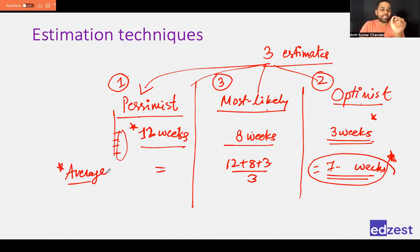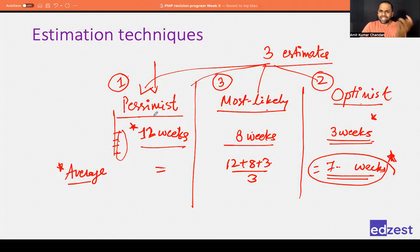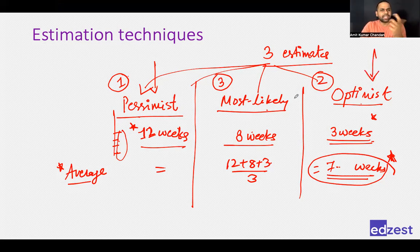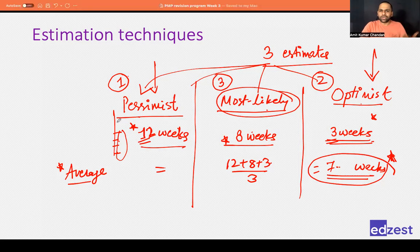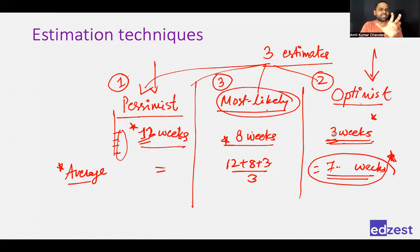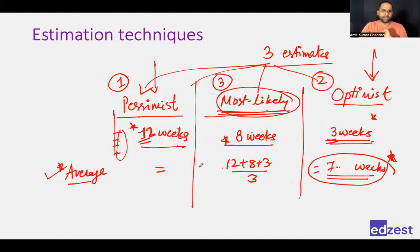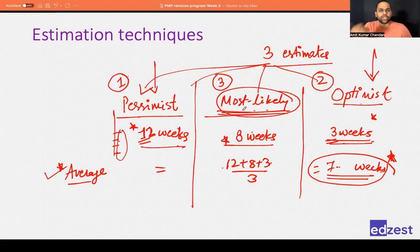However, the probability that everything will go wrong is less, and the probability that everything will go right is also less. The chances of finishing close to 8 weeks is much greater than 12 weeks or 3 weeks, because in any project, not everything goes wrong and not everything goes right. So why are we giving the same weightage when taking the average?